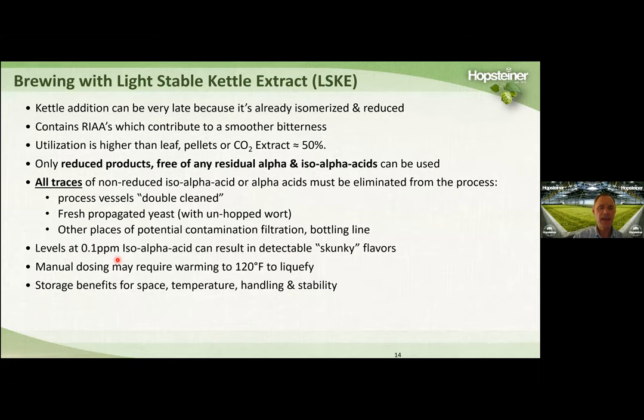We found that as little as 0.1 parts per million of iso-alpha acid in the beer can make the beer light struck or skunky. The product has the same benefits as CO2 hop extract in terms of handling, stability, and storage.